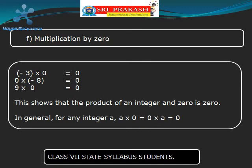Now let us see the multiplication of any integer by 0. Minus 3 into 0 is equal to 0. 0 into minus 8 is equal to 0. This shows that the product of an integer and 0 is 0. In general, for any integer A, A into 0 or 0 into A is equal to 0.